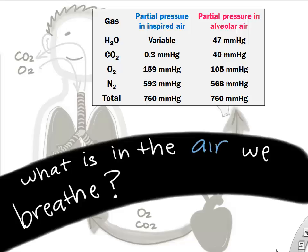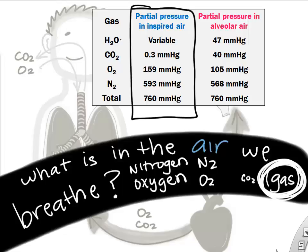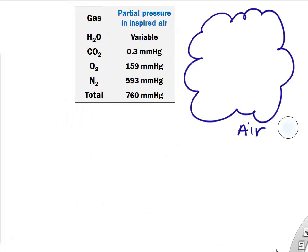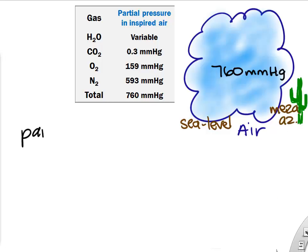If we look at the earth's atmosphere and the air that we breathe, we see that it's mostly nitrogen and oxygen and a little bit of CO2. This is the gas or air that we breathe in, and these are the partial pressures of the gases that we breathe. The total air pressure is 760, and we want to know how much of that total air pressure is due to things like oxygen and carbon dioxide and any gas in the atmosphere.